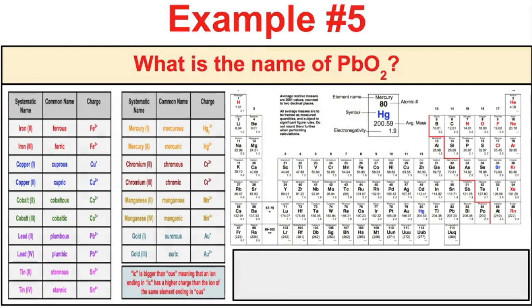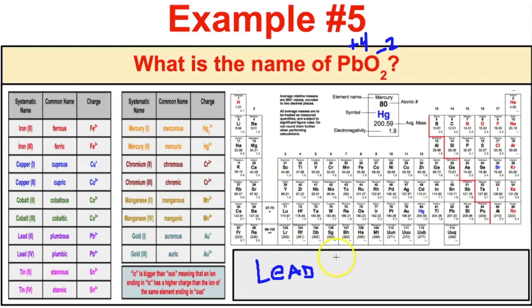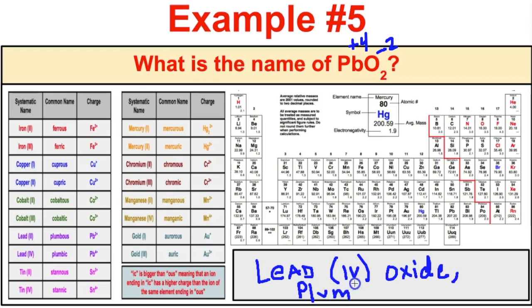Given the formula PbO₂, oxide forms a negative 2 charge and there are two of them, so 2 times negative 2 is negative 4. With only one lead ion, it must have a positive 4 charge. The systematic name is lead(IV) oxide. Using the common name, this is plumbic oxide.